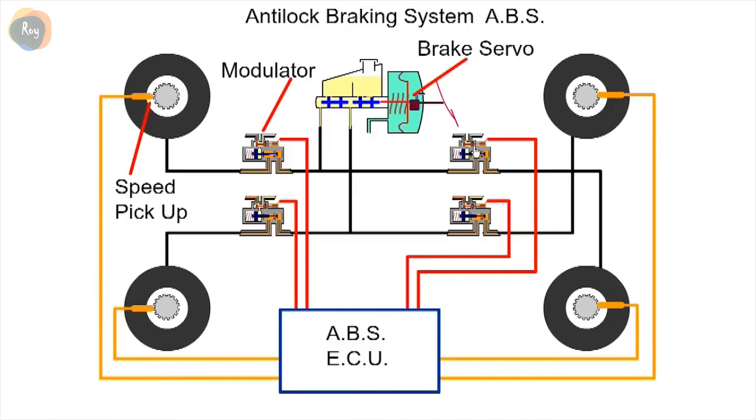Here we have a four channel, four sensor ABS system where each wheel is controlled individually. Wheel speed is detected by a proximity sensor located beside a toothed wheel which sends a signal to the ECU.